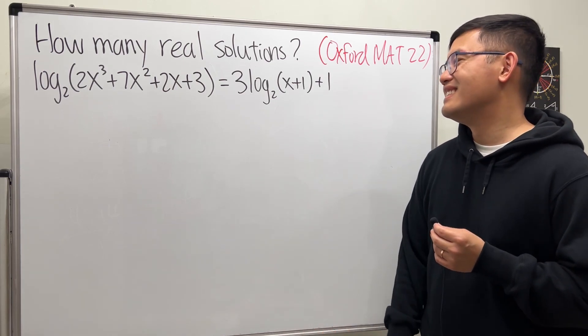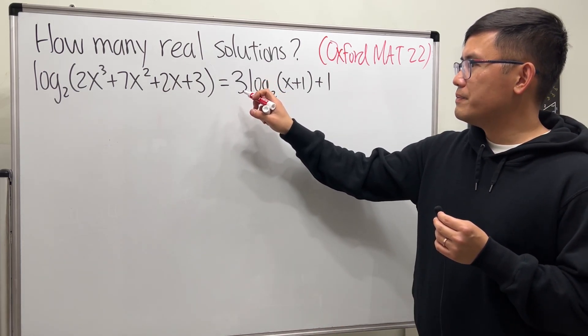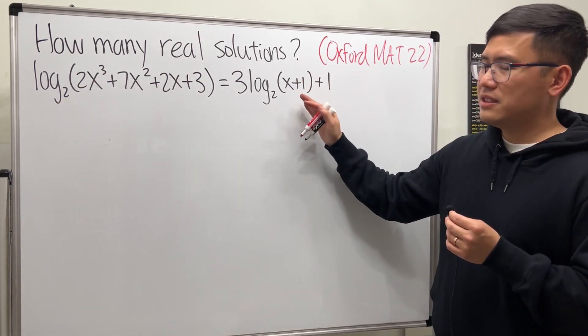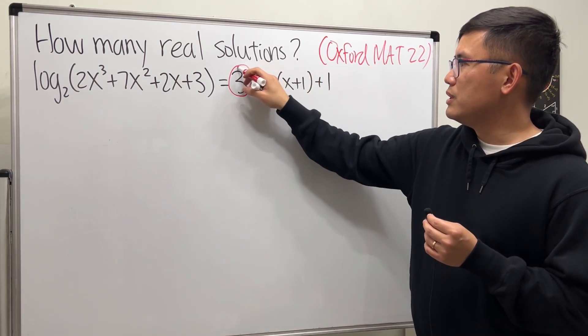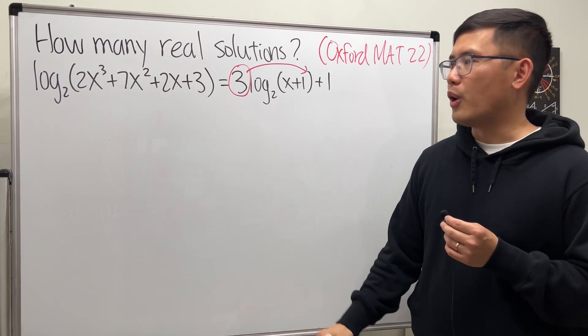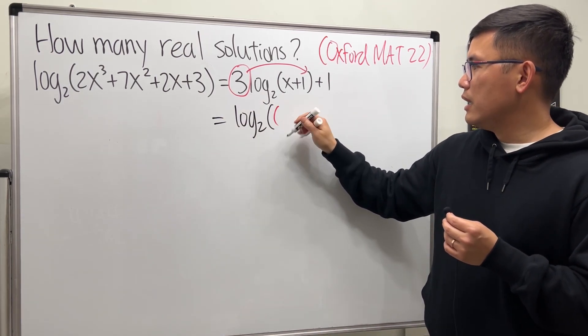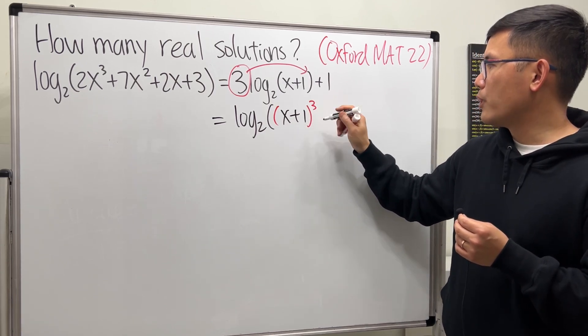Firstly though, this is log base 2 already. Let's fix this side. Let me put the three up here, make that into a power. So we get log base 2 of (x + 1) to the third power.